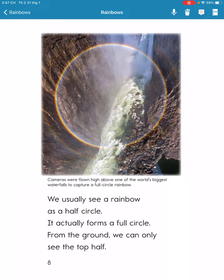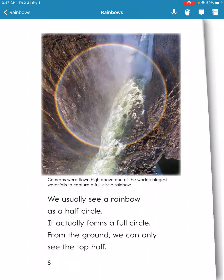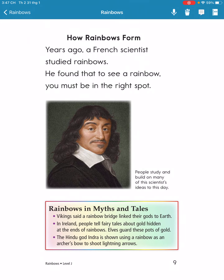We usually see a rainbow as an arc, but it is actually a full circle. From the ground, we can only see the top half.